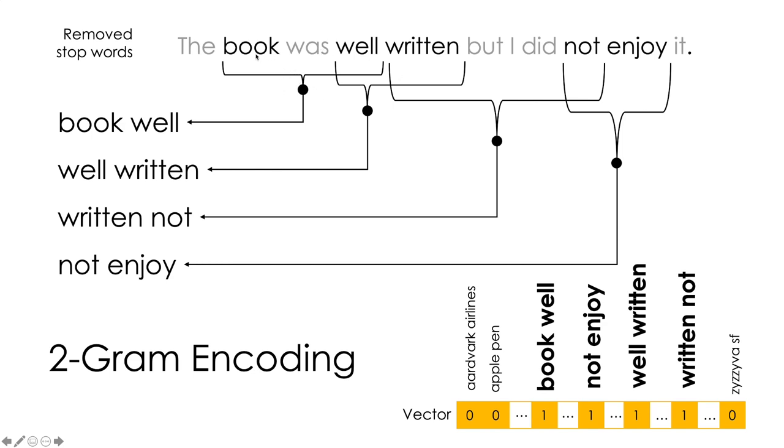If I take the sentence here and I've removed all the stop words, then the n-gram encoding of this sentence might be book well, well written, written not, and not enjoy. And so I count the occurrences of these pairs of words. By counting pairs of words, I get a richer model that captures the sequential dependencies of things like not and enjoy. This would tell me that this sentence was not enjoy, so this is probably a negative review.